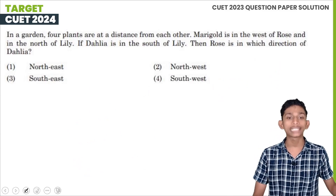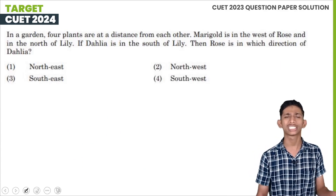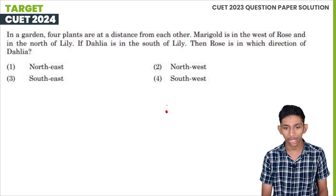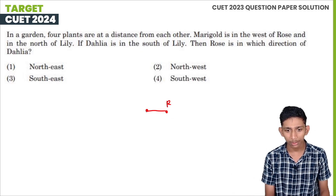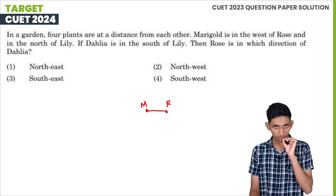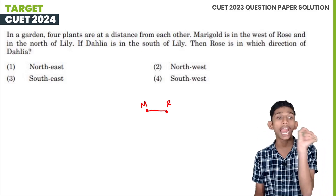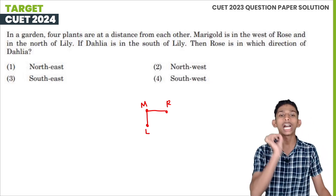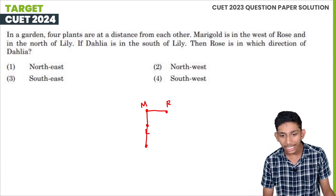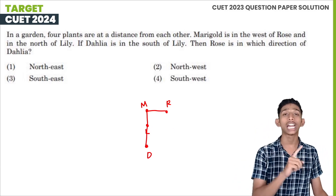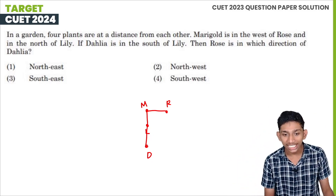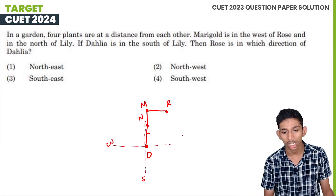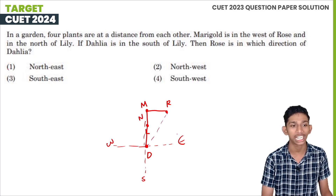The next question: in a garden, four plants are at a distance from each other — Marigold, Rose, Lily, and Dahlia. Marigold is in the west of Rose and north of Lily. Dahlia is in the south of Lily. Then, Rose is in which direction of Dahlia? Working through the four directions — west, north, south — Rose is to the north of Dahlia.